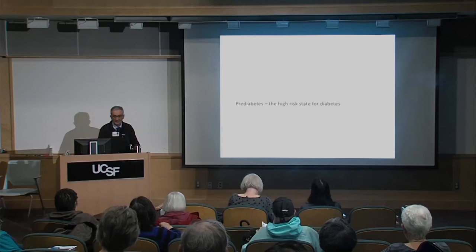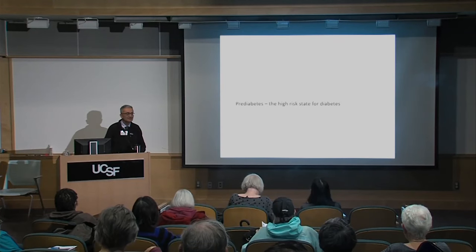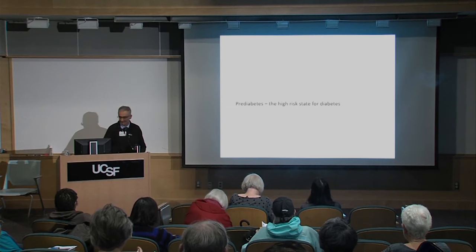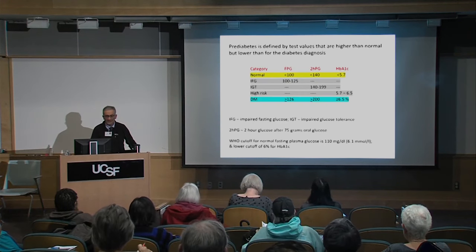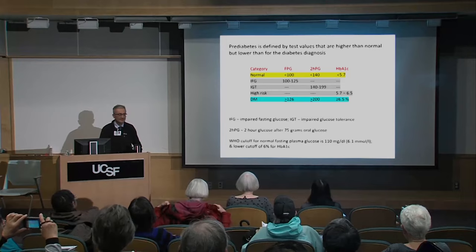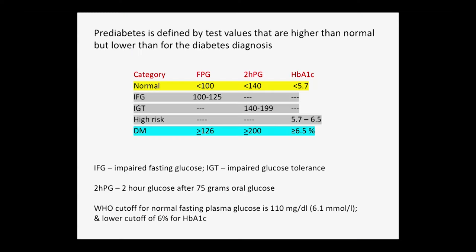Pre-diabetes — what is it? It's the high-risk state for developing diabetes. It's defined by test values that are higher than normal, but lower than the diabetes diagnosis threshold.